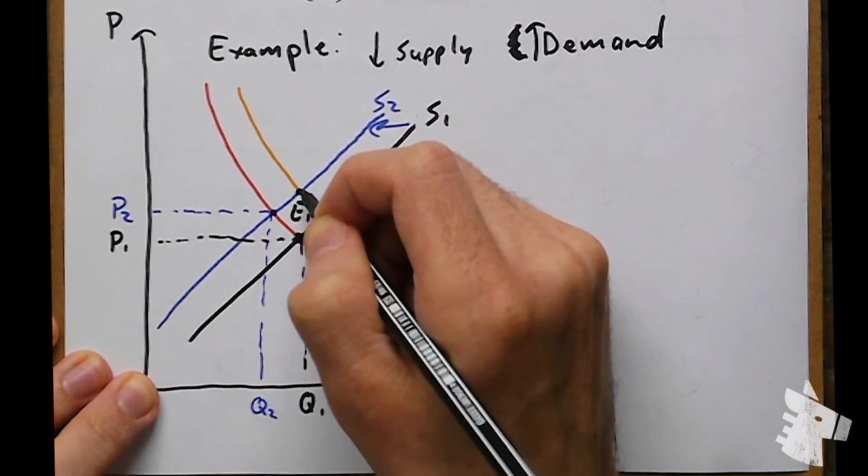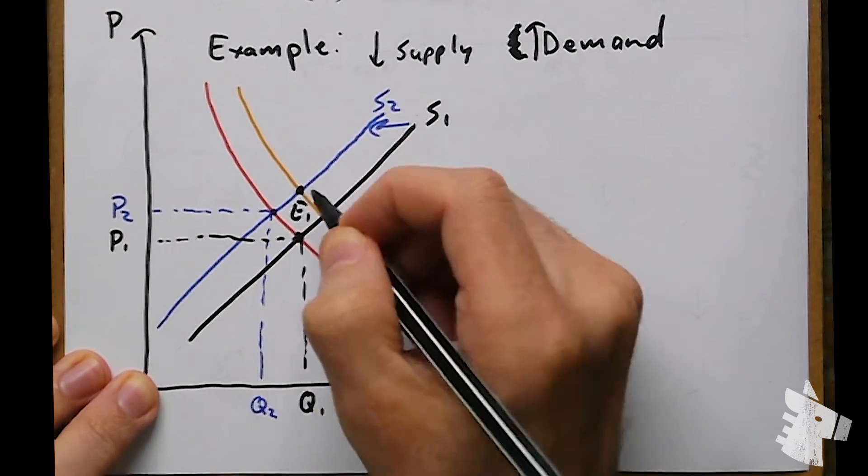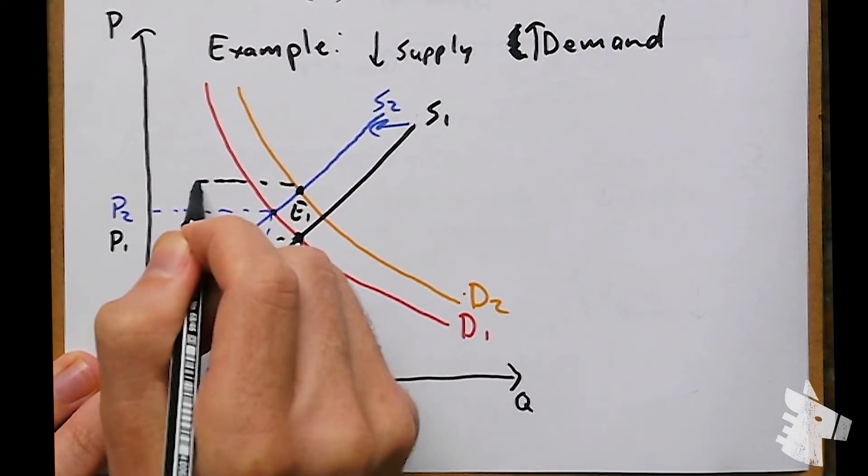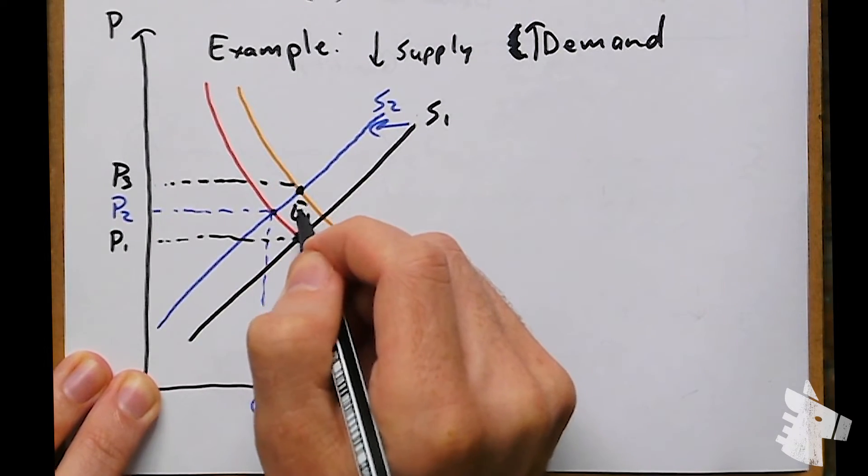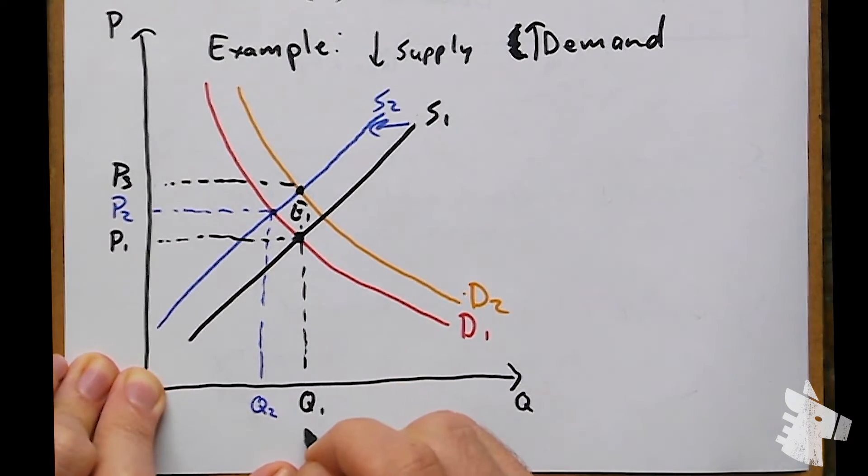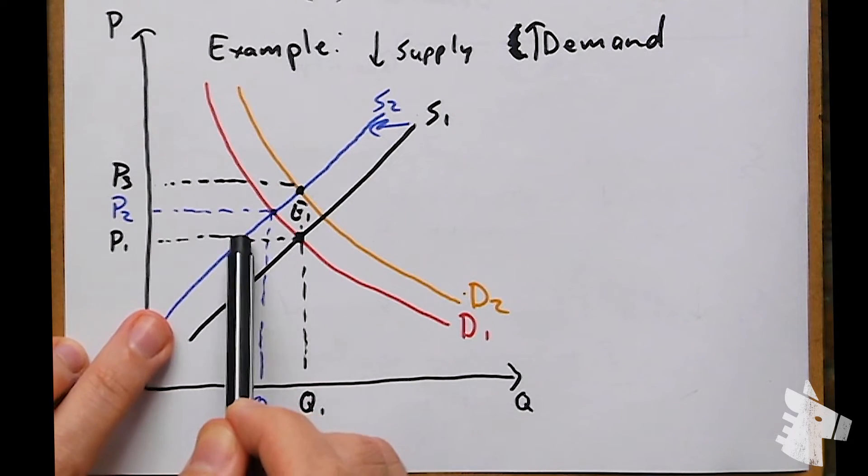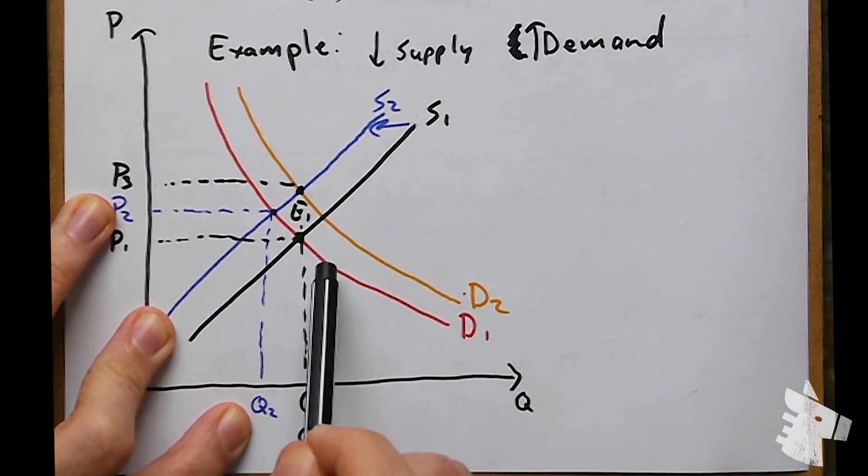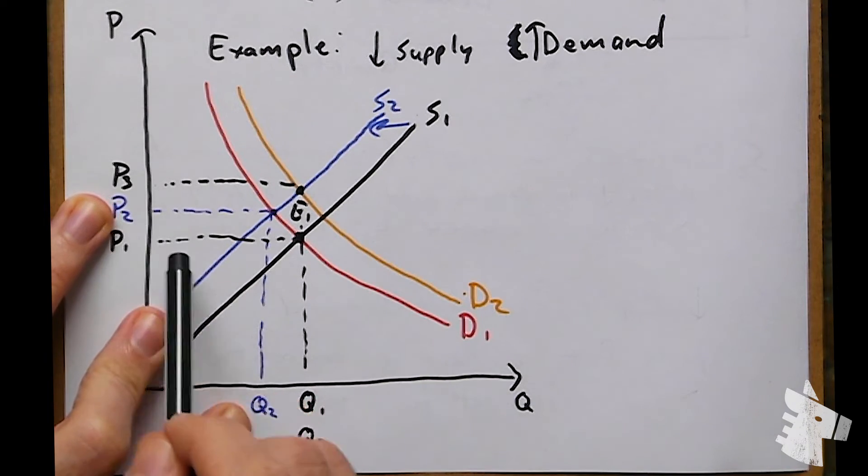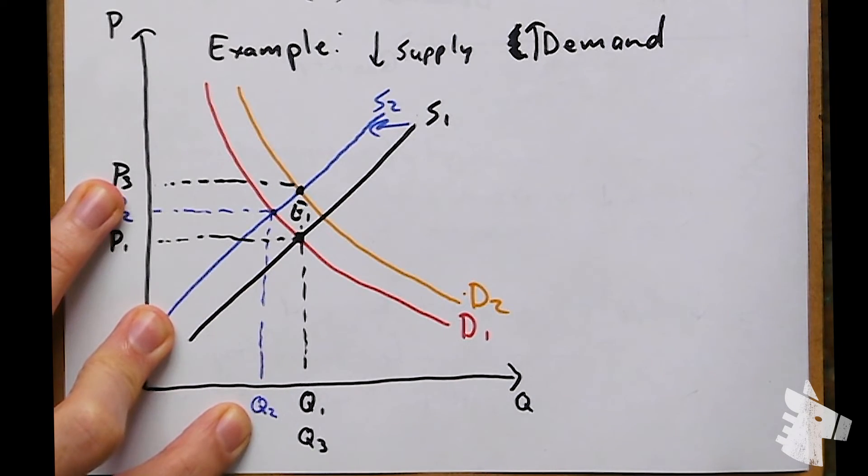So the price must rise in order to motivate more sellers to enter the market. So from here, price rises to P3, and quantity also rises right back to the same spot as Q1. So from our initial equilibrium point, our reduction in supply caused price to rise and quantity to fall. And from there, an increase in demand caused our price to rise further and our quantity to rise back to the initial point.